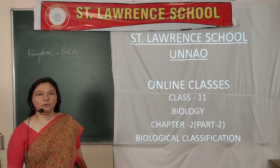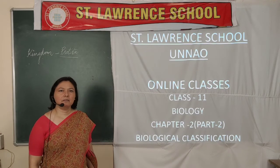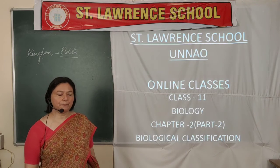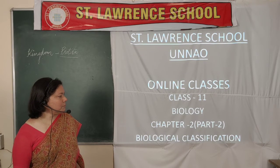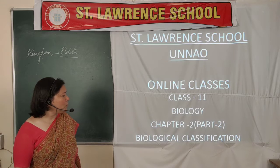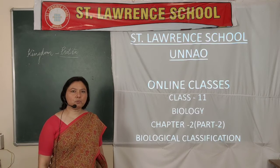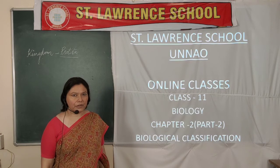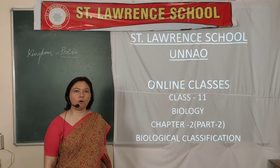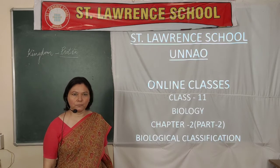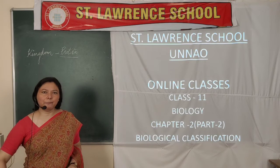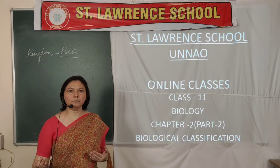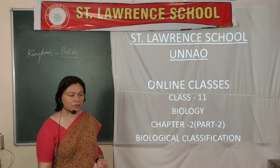Good morning to all. Welcome to online class. Today Mr. Rukma is going to teach Class 11th Biology, Chapter 2, Part 2 of Biological Classification. In Part 1 we covered the first kingdom, Kingdom Monera, which possesses the characteristics of prokaryotes and unicellular forms — all bacteria and similar organisms which do not have a well-defined nuclear membrane.